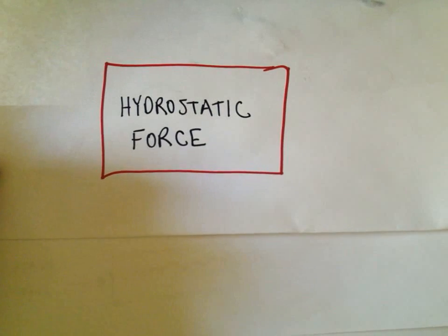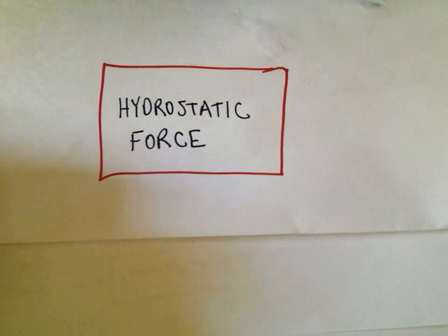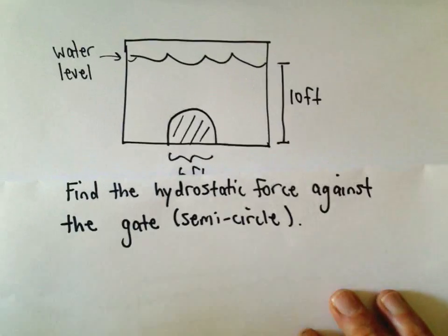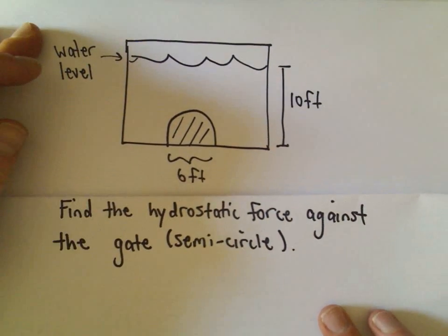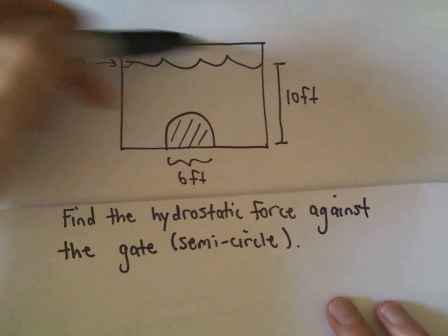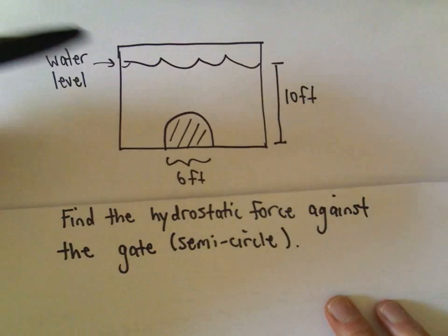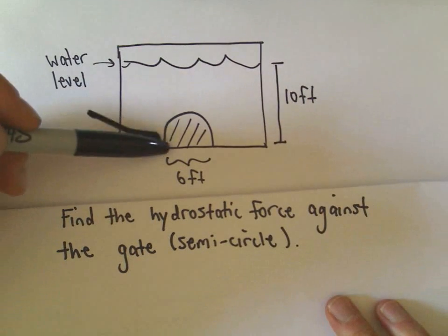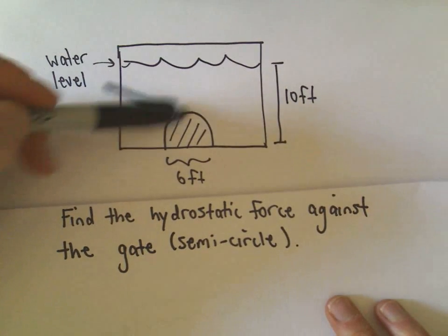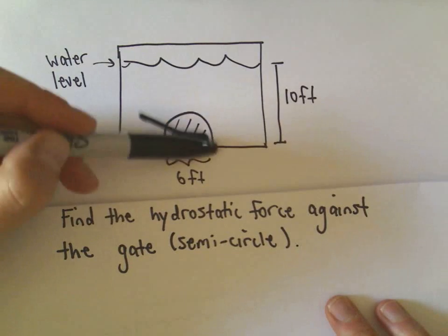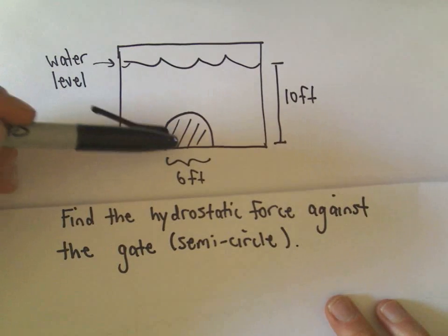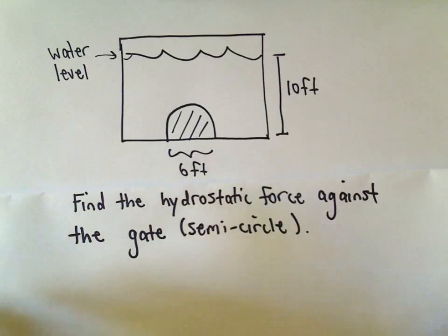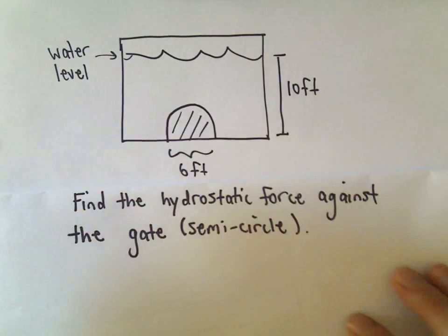In this example, I want to look at one more problem of calculating hydrostatic force. We've got a little dam here, holding back some water. The water level is going to be 10 feet, and we're going to have a semicircular gate at the bottom of the dam that's going to have a diameter of 6 feet. We're going to find the hydrostatic force against that gate.